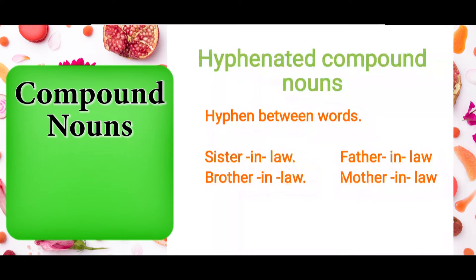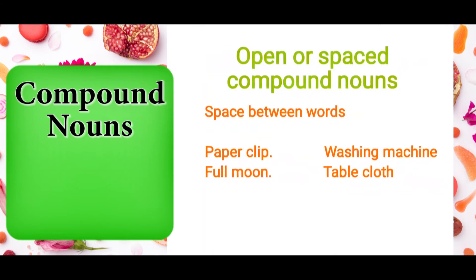Hyphenated compound nouns have a hyphen between words. For example, in 'sister-in-law,' there is a hyphen between the three words. These kinds of nouns are called hyphenated compound nouns. Examples include: sister-in-law, father-in-law, brother-in-law, and mother-in-law.